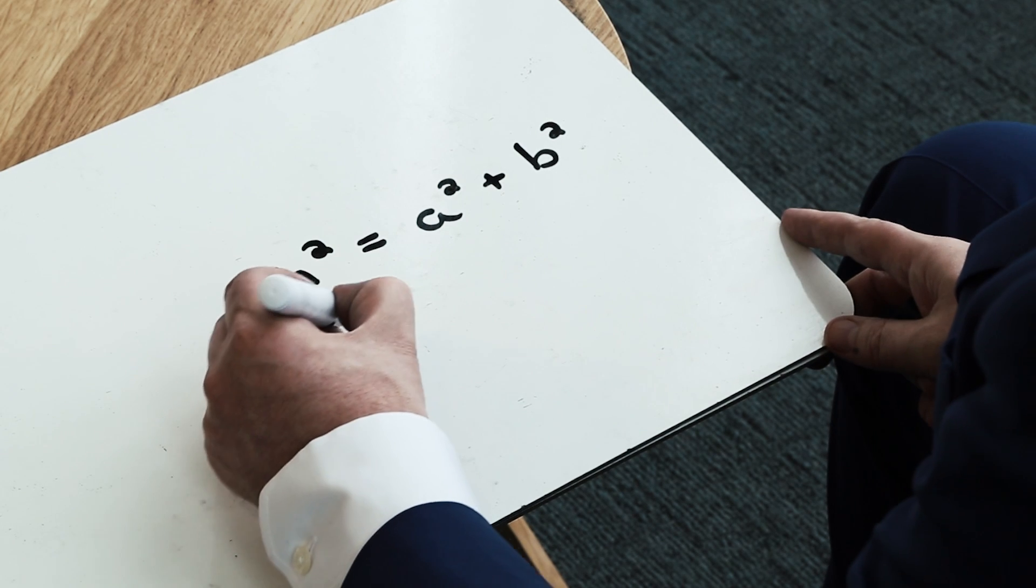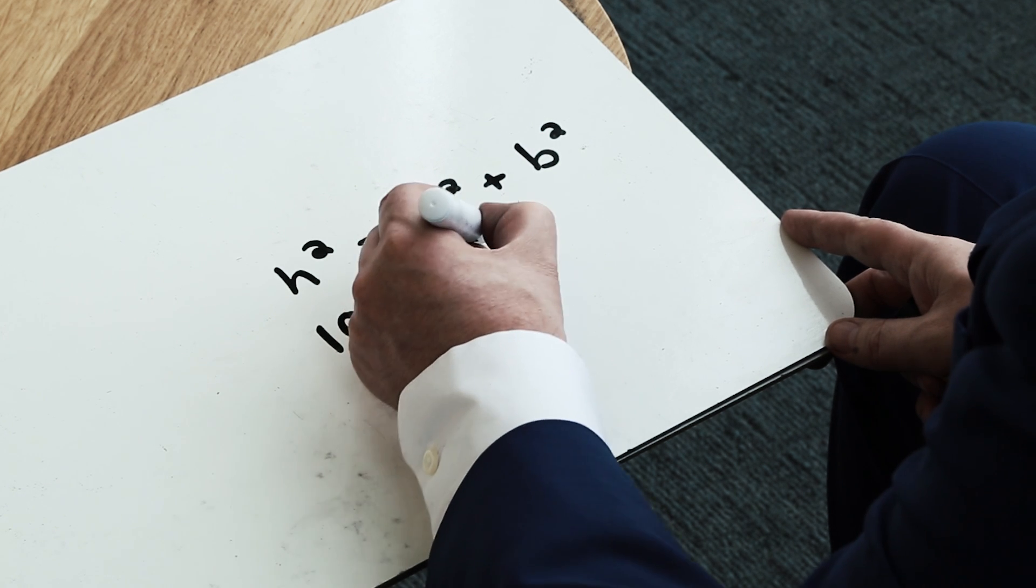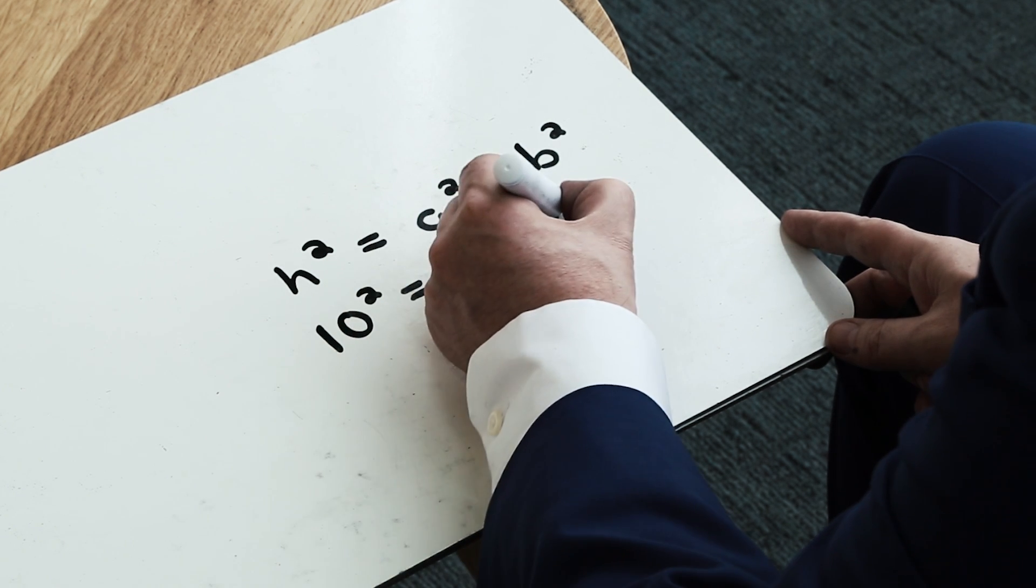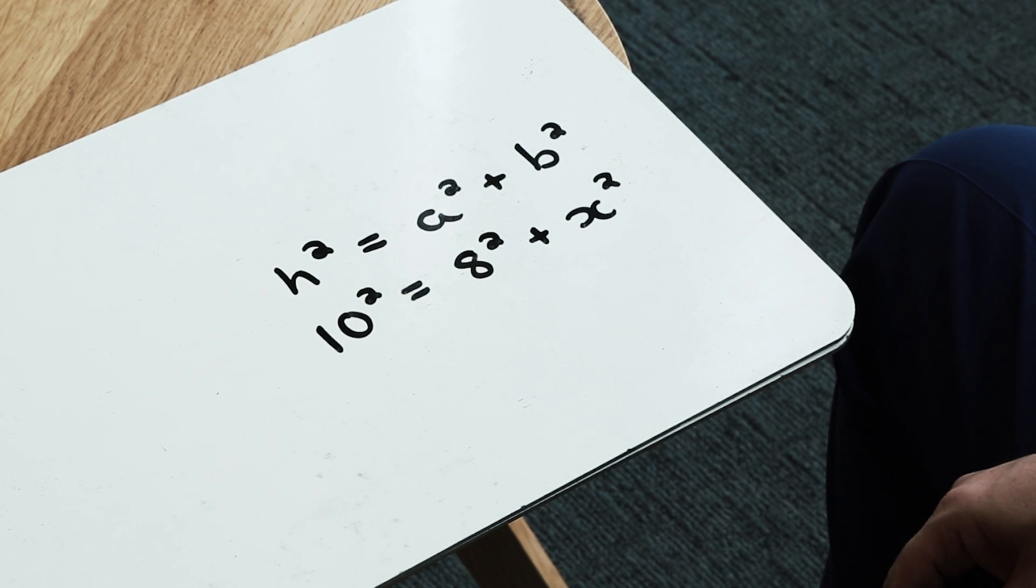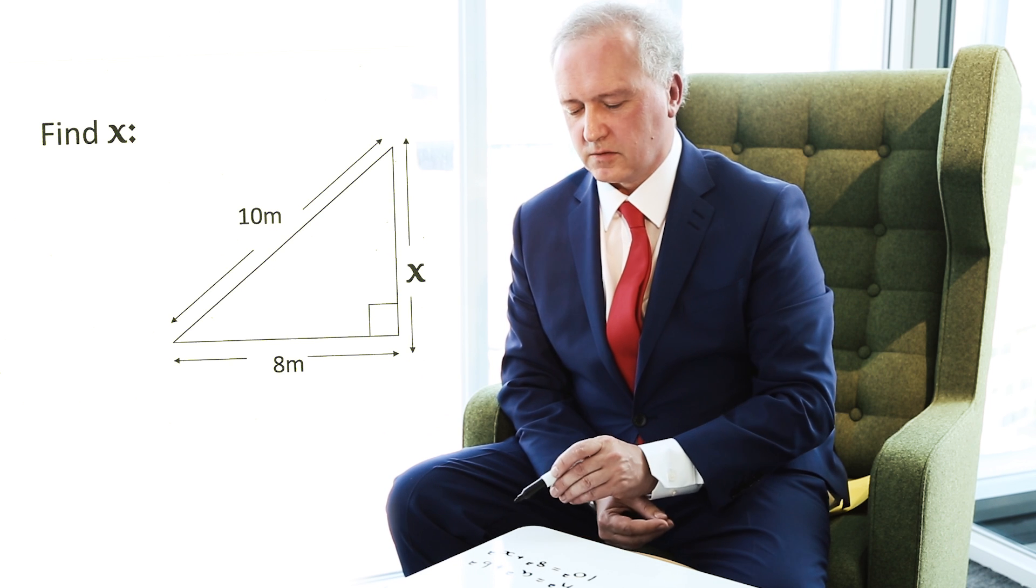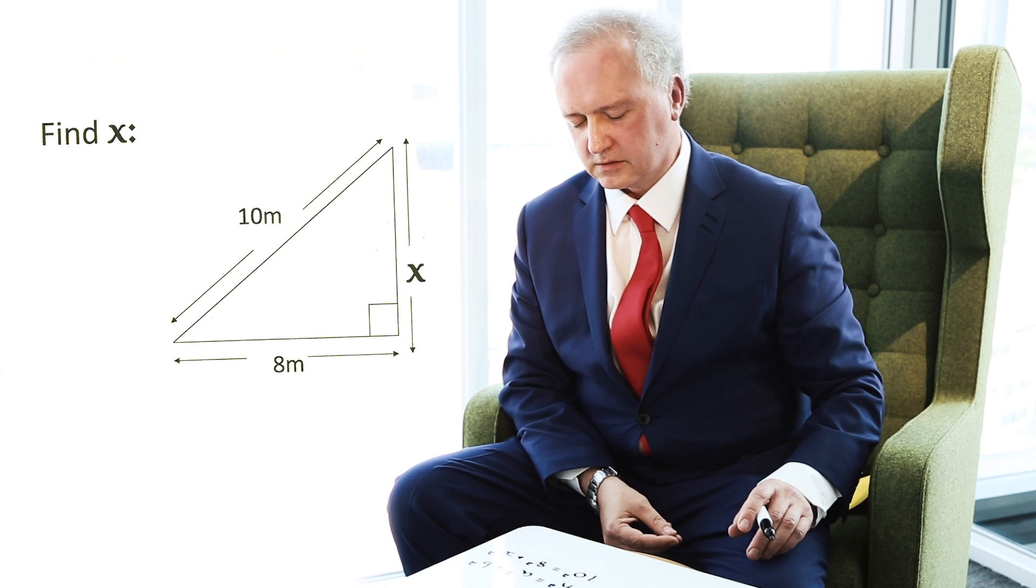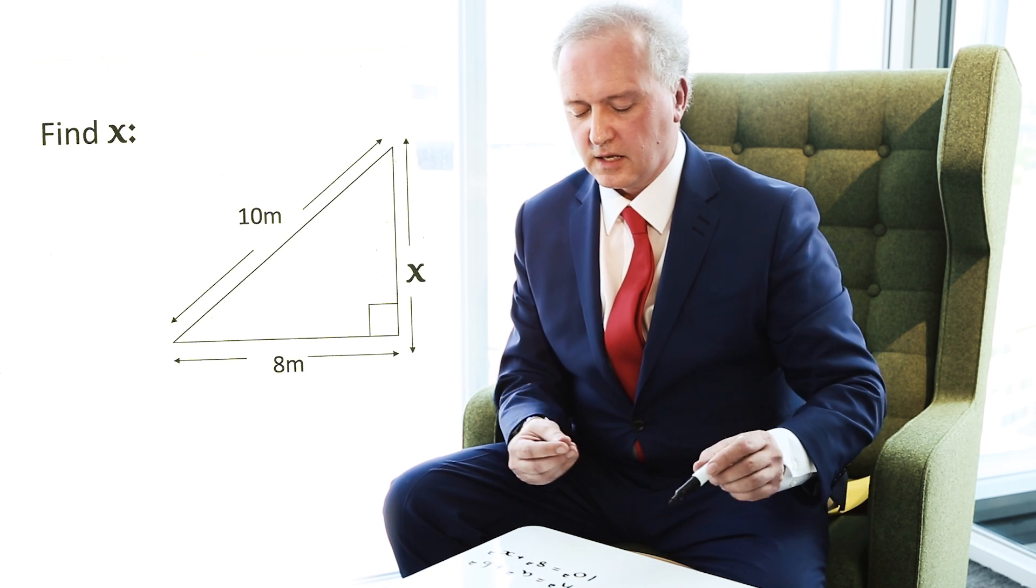Because I know that the hypotenuse given is 10 metres, my first line of attack is to say that 10 squared is equal to 8 squared plus x squared. And the good news here is it doesn't really matter whether I put 8 squared plus x squared, or x squared plus 8 squared. Whether that's a and that's b, or whether that's b and that's a, it doesn't really matter.